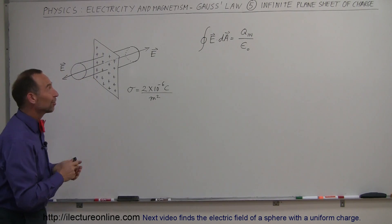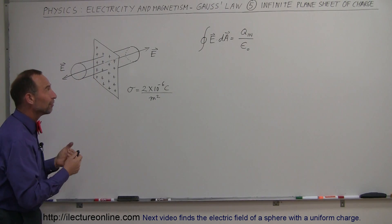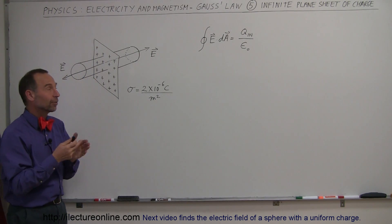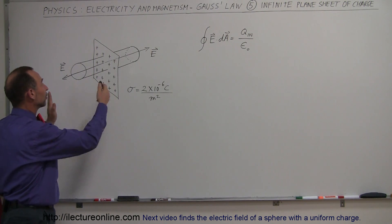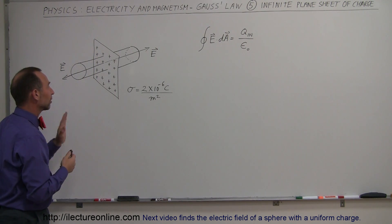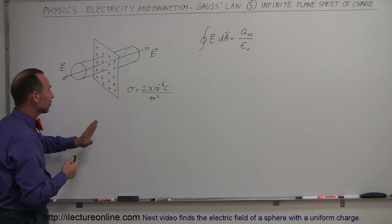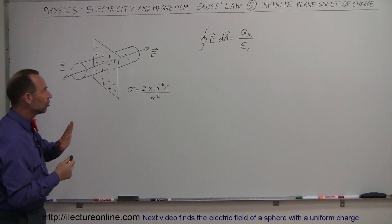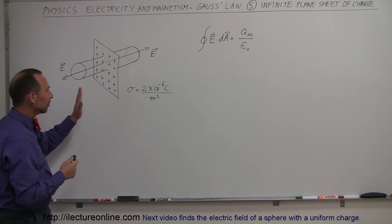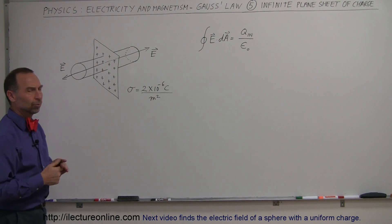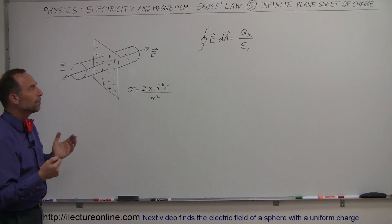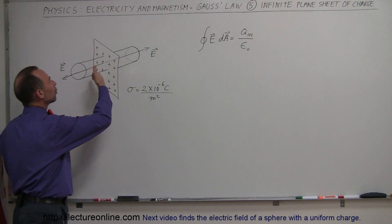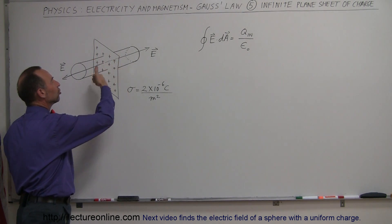Welcome to Electronline. Here's another example of how we can use Gauss's law to find the electric field near this particular object. This object here is an infinite sheet filled with charge. Since the sheet is infinite and presumably made out of conductor material, we will find charge on both sides of this sheet.